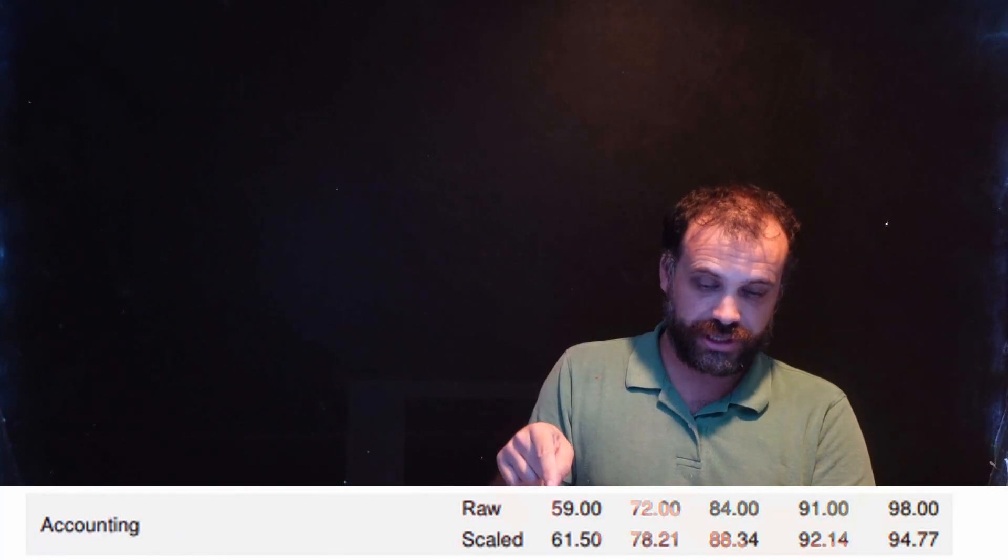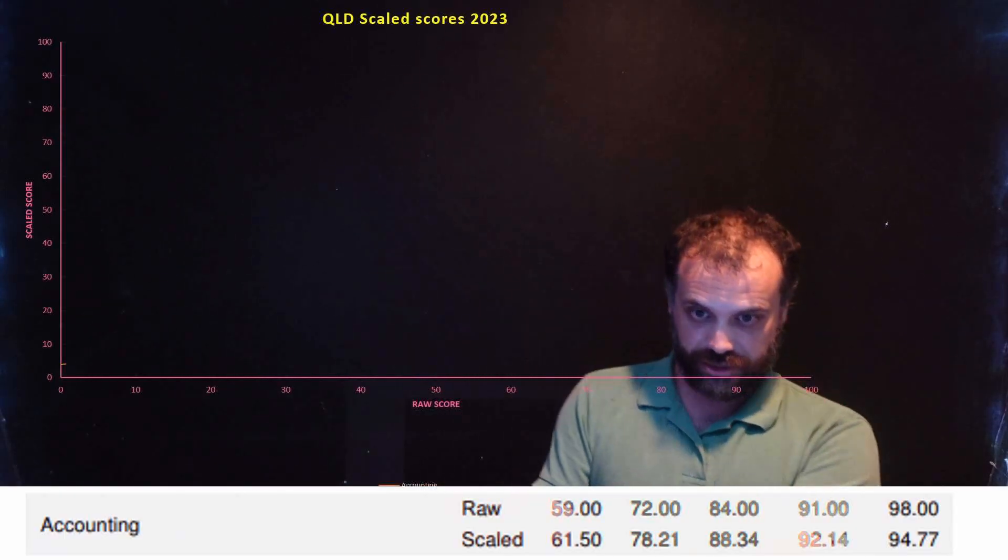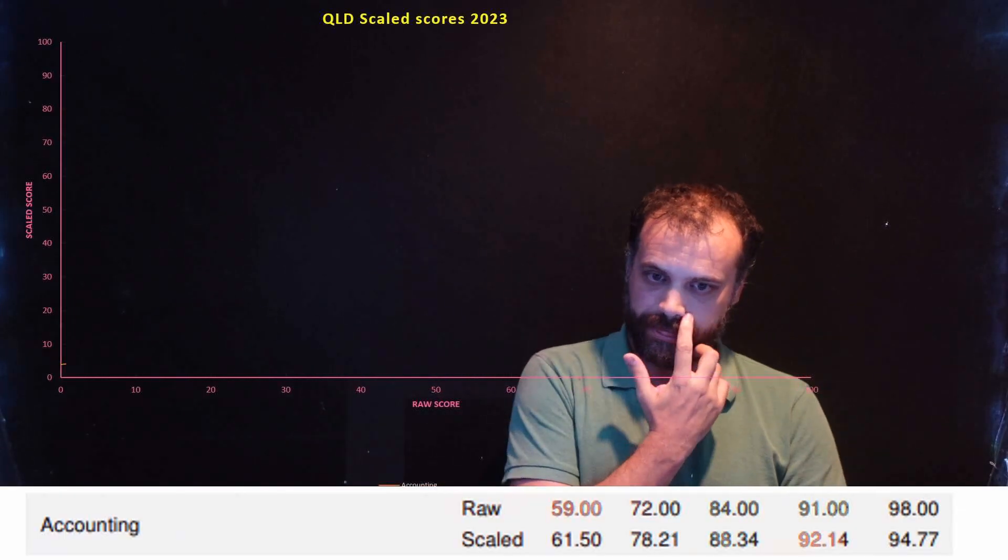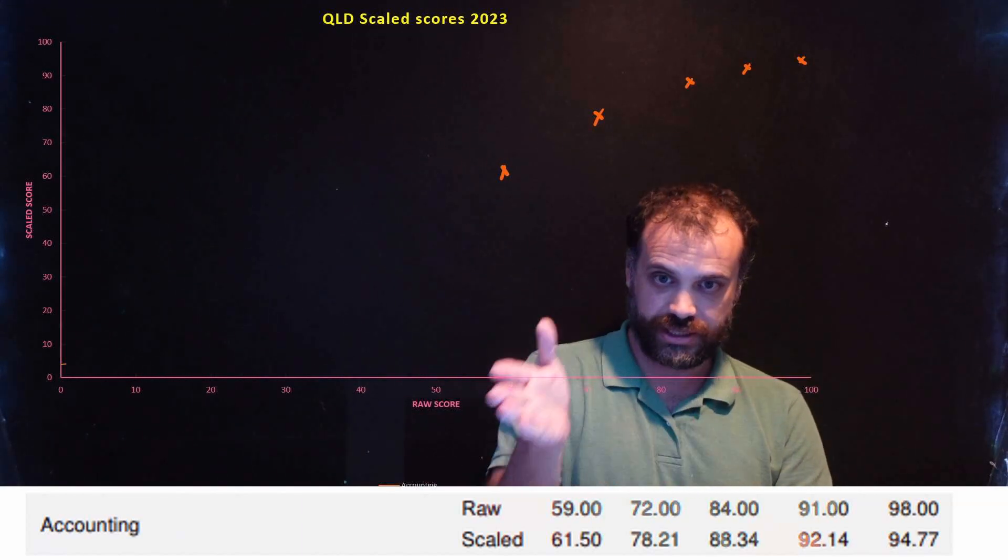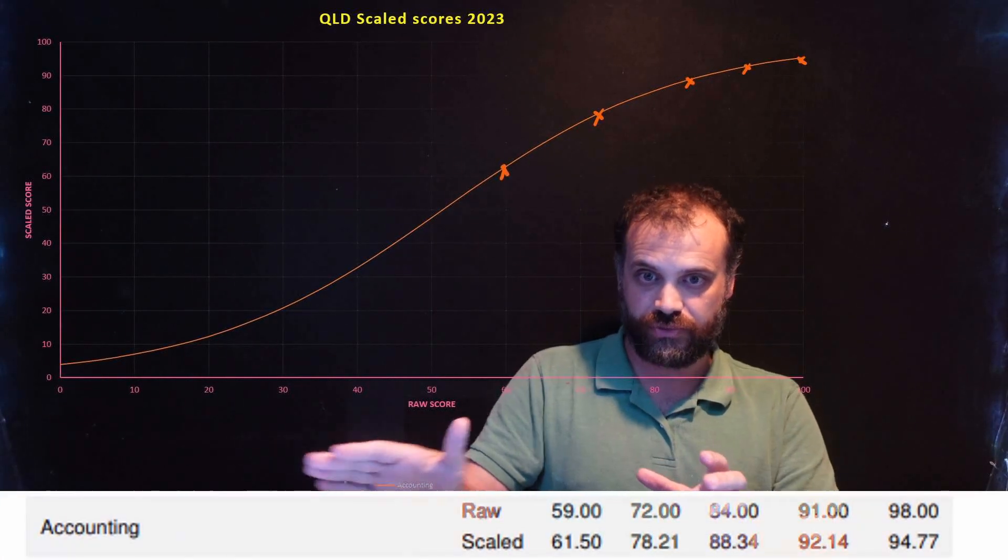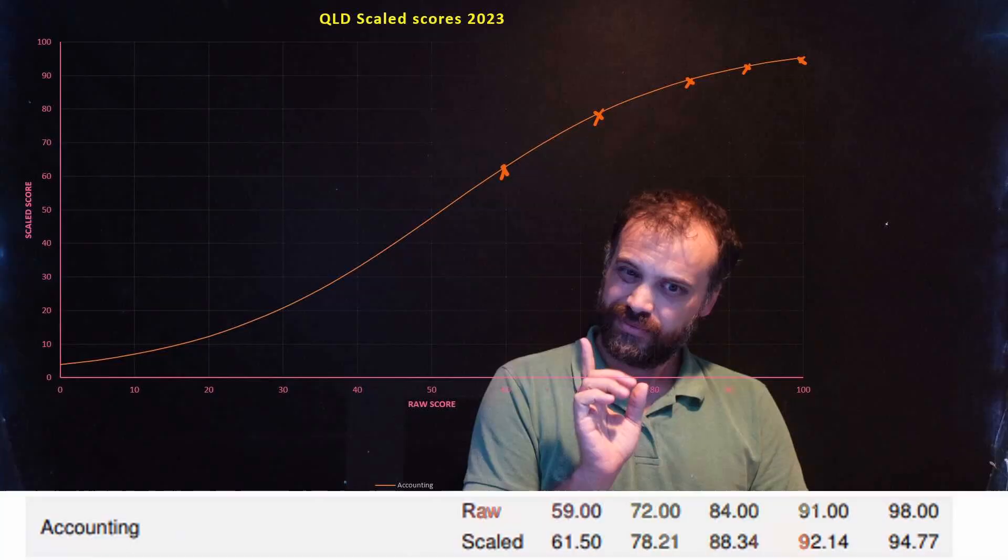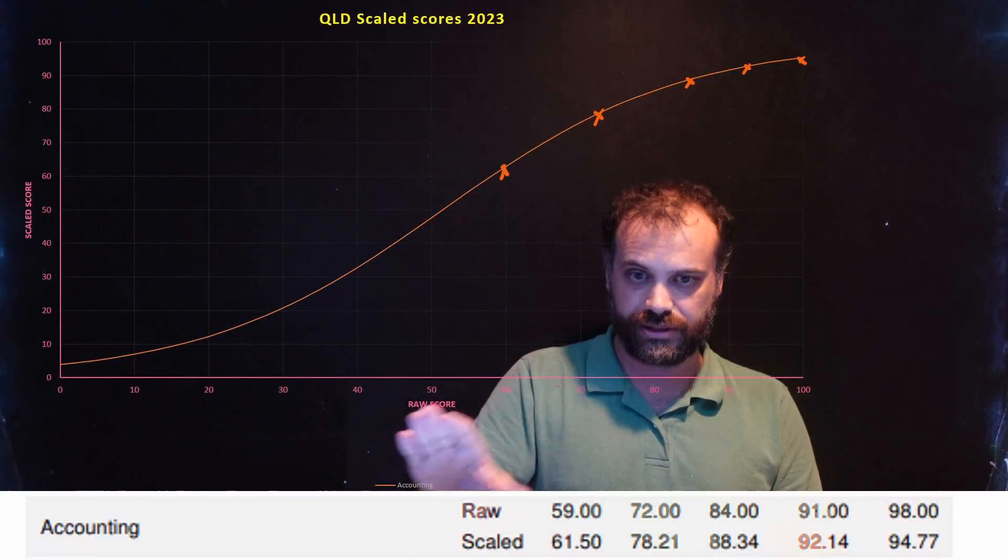What I did was take a graph and plot those on the graph. And then once that's plotted, I create this nice logistic curve based upon those points. That's what we believe happens with all of this scaling.